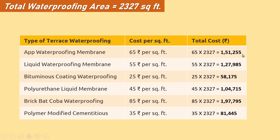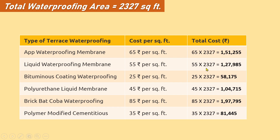Note that I'm talking about types of waterproofing, not brands — there are many brands available in the market like Dr. Fixit, SIGCA, and others. Next is liquid waterproofing membrane, which costs around 55 rupees per square feet: 55 × 2,327 = 1,27,985 rupees. Then bituminous coating waterproofing — the same type of bitumen used in road construction — costs 25 rupees per square feet. It is more economical but takes more time: 25 × 2,327 = 58,175 rupees. Next is polyurethane liquid membrane at 45 rupees per square feet: 45 × 2,327 = 1,04,715 rupees.